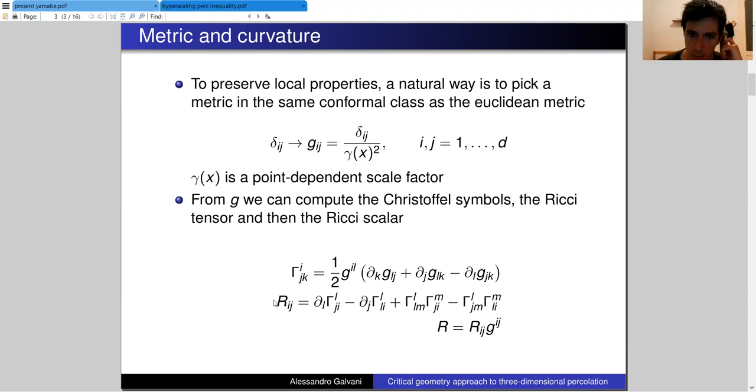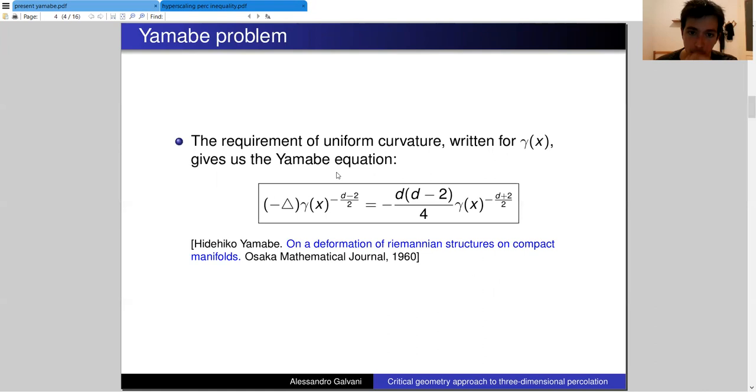Starting from our metric, we can compute the Christoffel coefficients, then obtain the Ricci tensor, and after a contraction, we get the Ricci scalar curvature. We would like this quantity to be constant and negative.